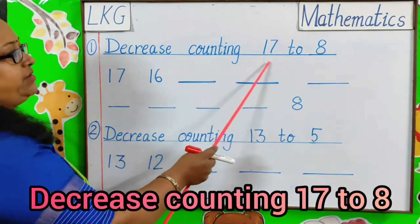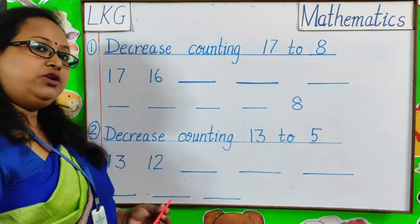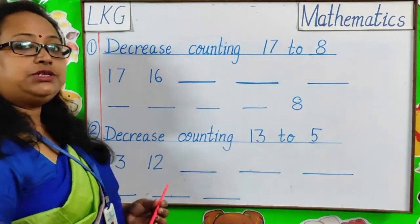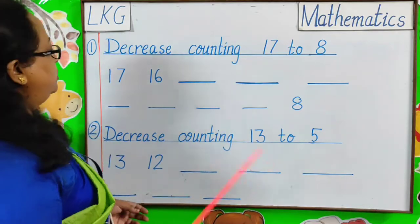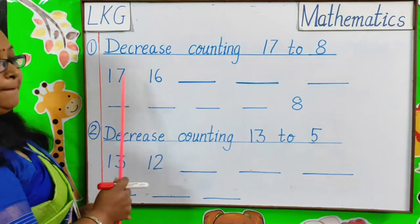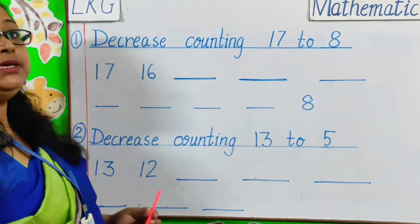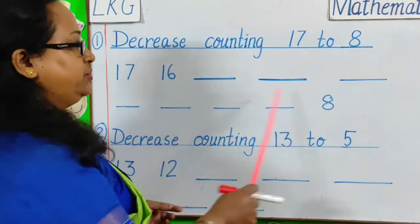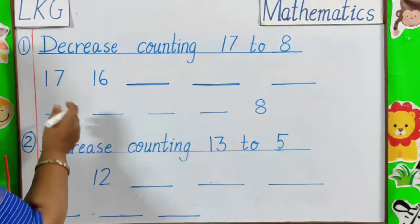Decrease Counting 17-8. Children, as we have already learnt, decrease counting means backward counting, from bigger number to smaller number. We can see 17, 16, bigger number to smaller number. In the same manner, we have to complete the line. Let us write the answer.